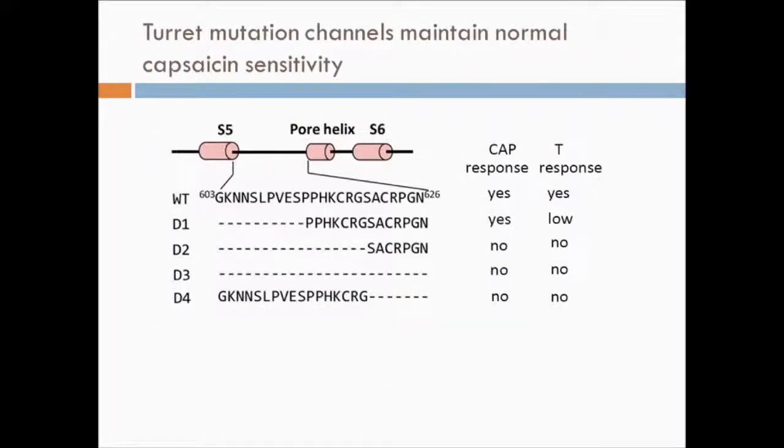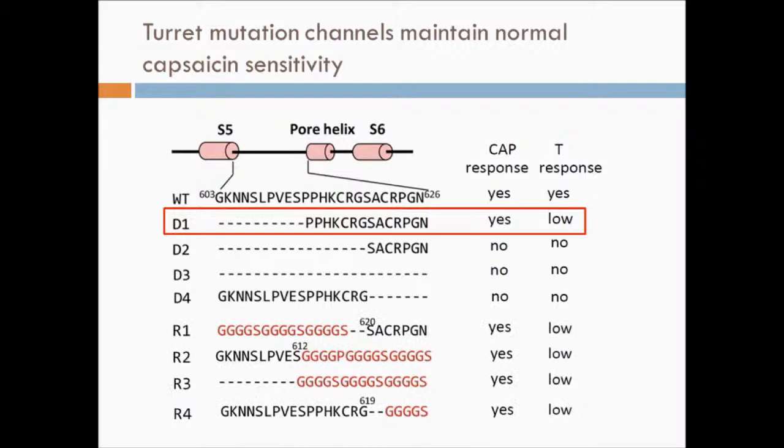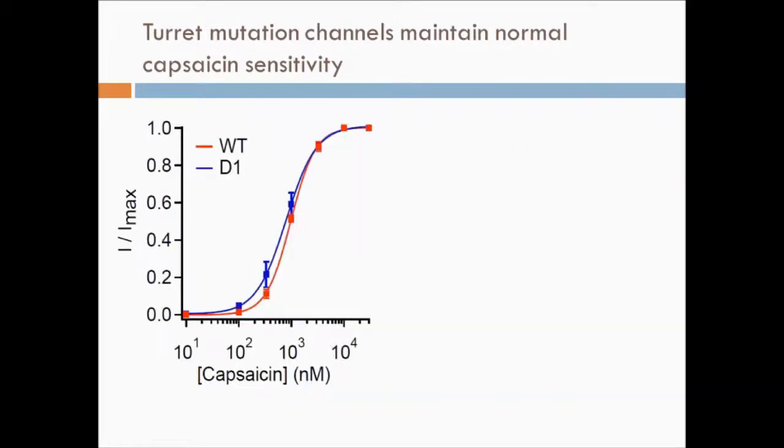To further test the turret's role in heat sensing, I made a series of turret deletion mutants. Among them, only D1 was functional. To recover the function of D2 to D4, I made four sequence replacement mutants, which were all functional. Importantly, all these mutant channels showed near-normal capsaicin sensitivity.